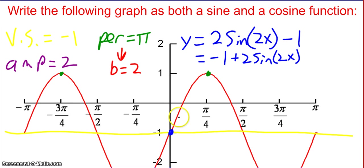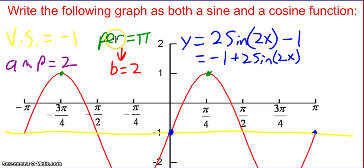From there, it's easy to see that the amplitude is two. The period is pi — one complete cycle goes from here to here, a distance of pi, or equivalently from negative three pi fourths to positive pi fourths. If the period is pi, then b must be two, because two pi divided by b equals pi means b equals two.